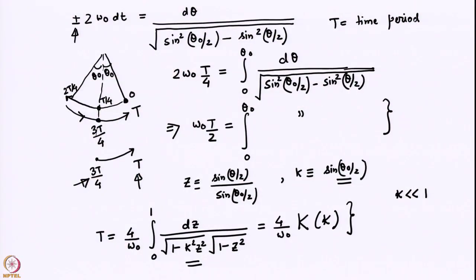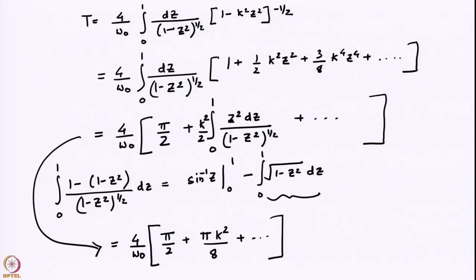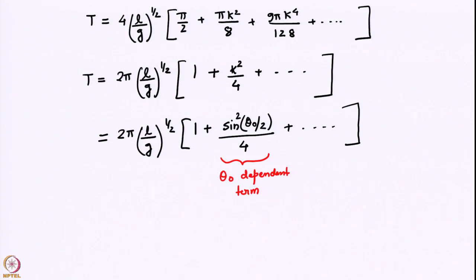We had also seen that we could make an approximation for the time period of the pendulum by writing it as 4 times the time taken to execute one-fourth of the oscillation. We then obtained another elliptic integral and solved it by doing a Taylor series expansion for small k — the modulus of the elliptic function — and obtained an expression for the time period of the pendulum.